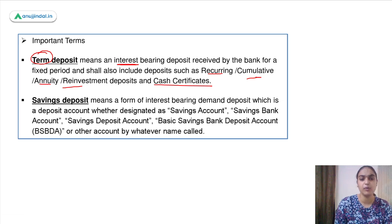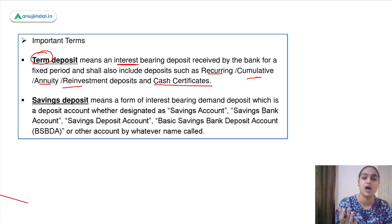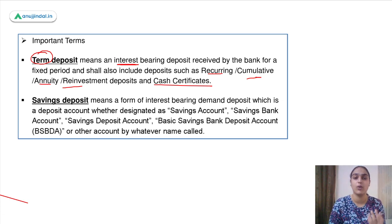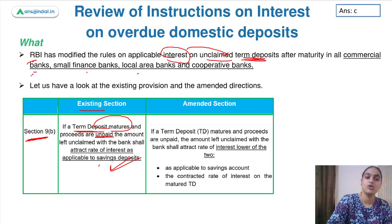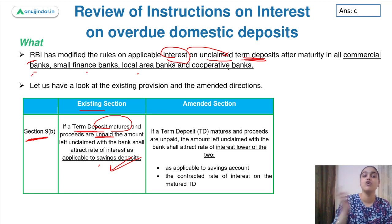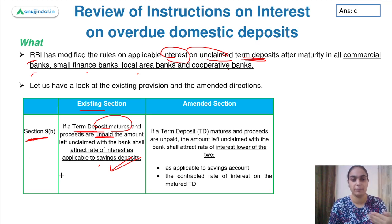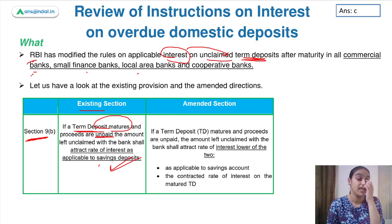What are savings deposits? These are your savings accounts — also called saving bank accounts or saving deposit accounts — where you earn some interest on the deposit you have made, and those deposits can be withdrawn whenever you want. So the existing provision said that unclaimed term deposits would earn the savings deposit interest rate. This was the existing provision.